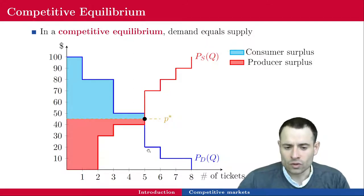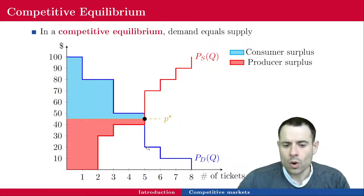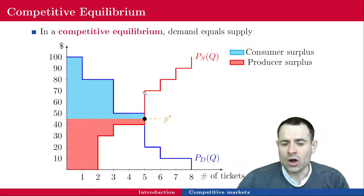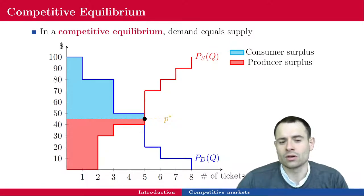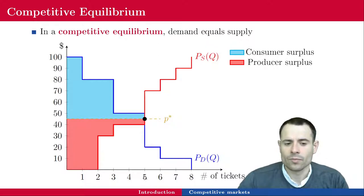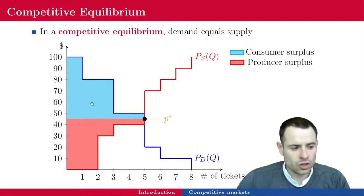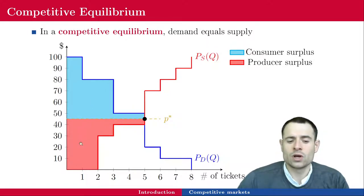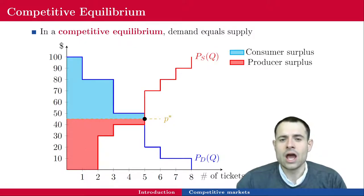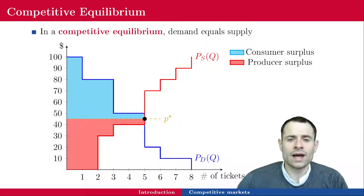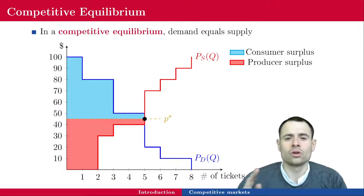Note that for the sixth unit, consumers are willing to pay $20, whereas producers are willing to sell the sixth ticket for $70. Trade cannot happen because consumers are not willing to pay $70, and firms are not willing to decrease their price all the way to $20 — so they stop at 5 tickets. The sum of the consumer surplus and the producer surplus is what we call the total surplus. If there was a tax, we would add the government revenue to the surpluses to get the total surplus.